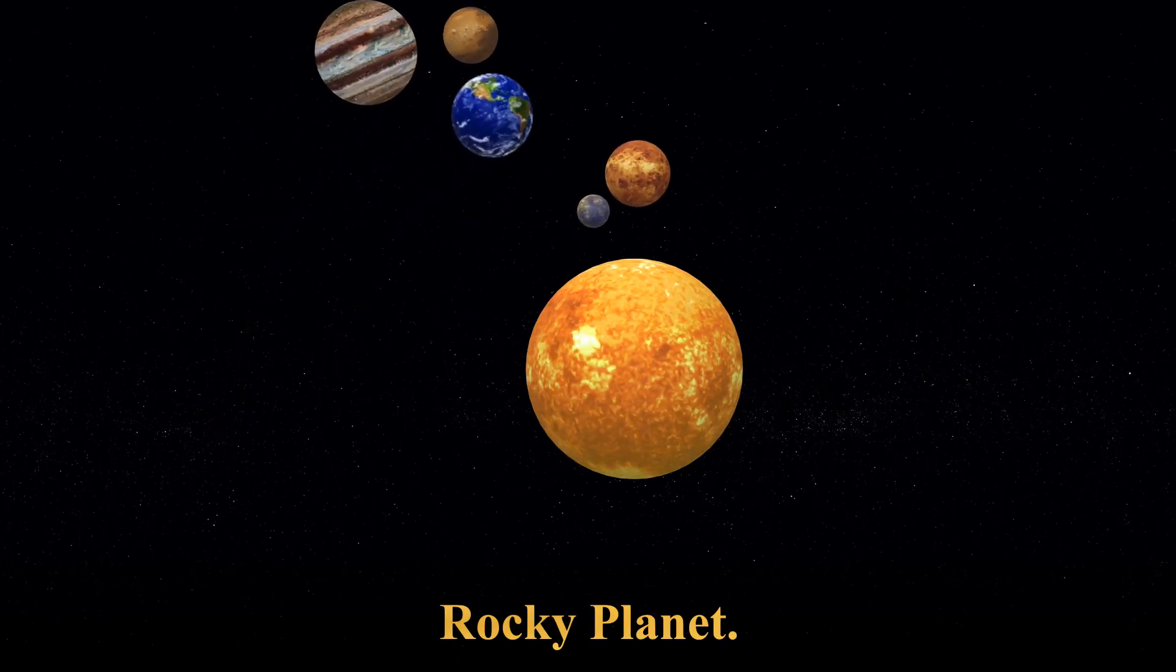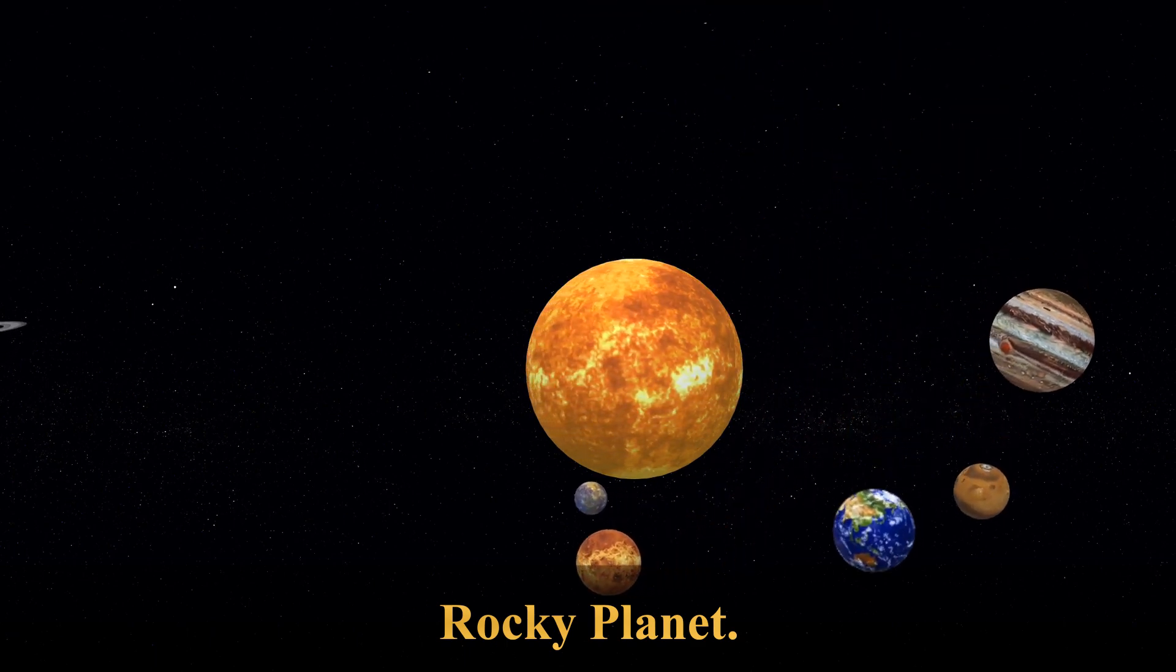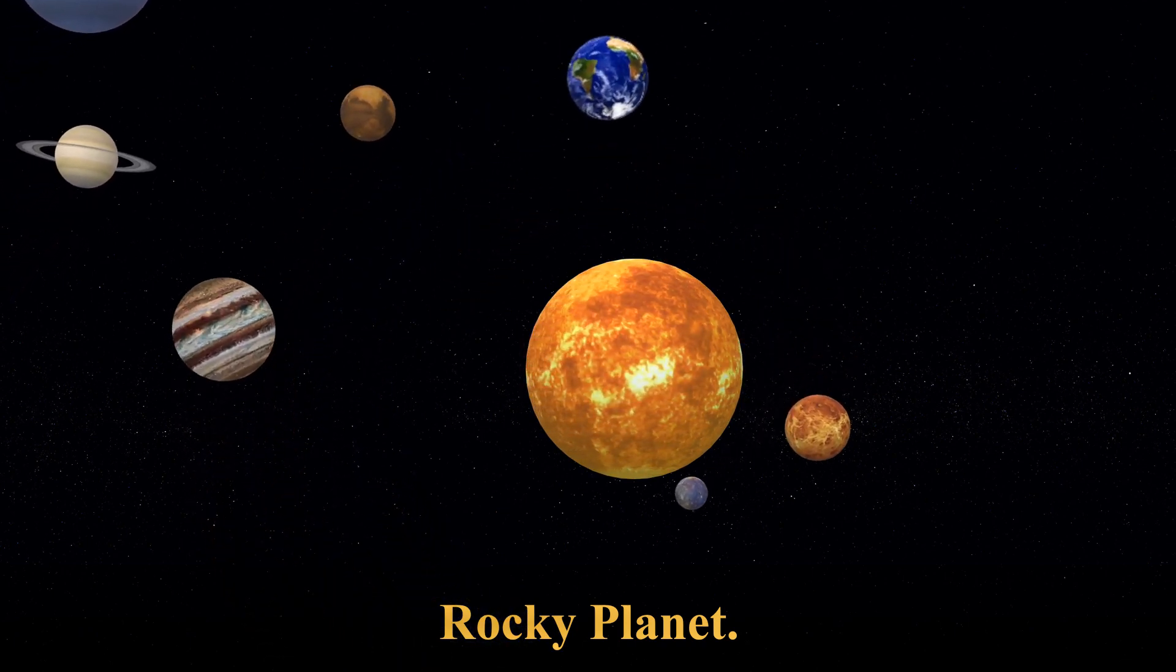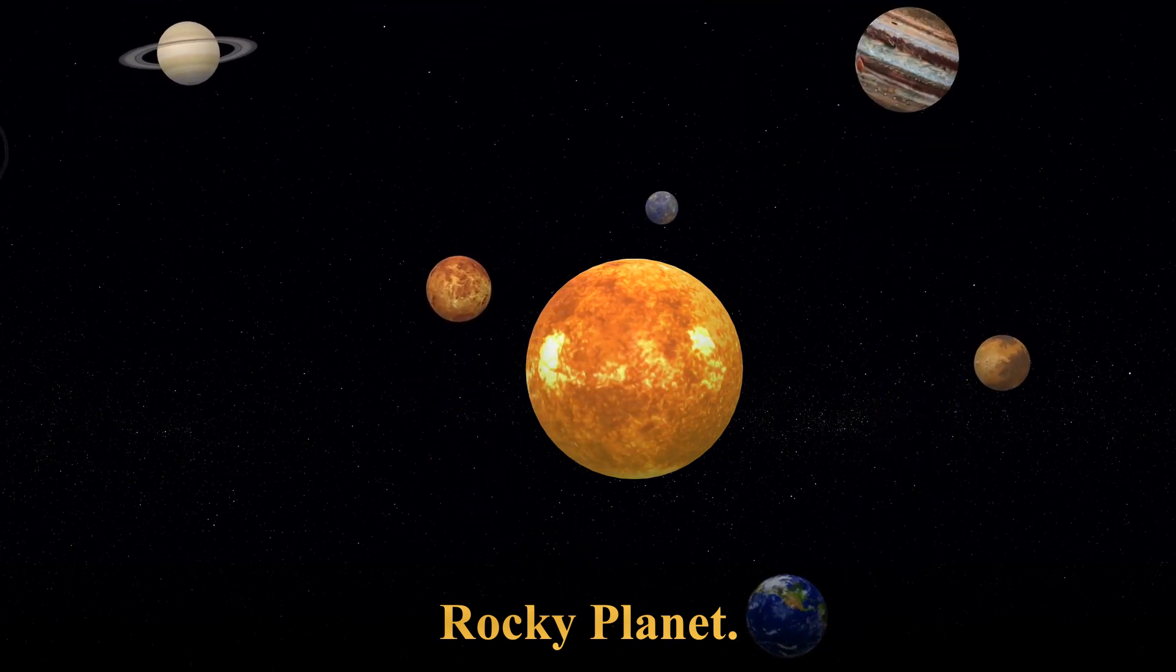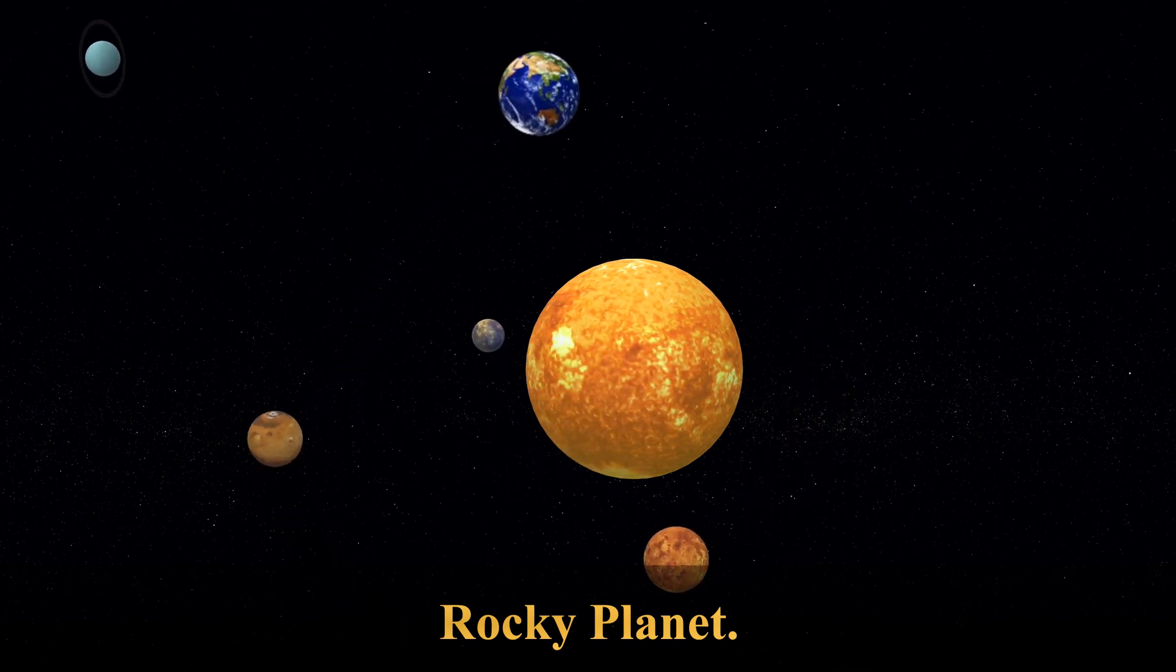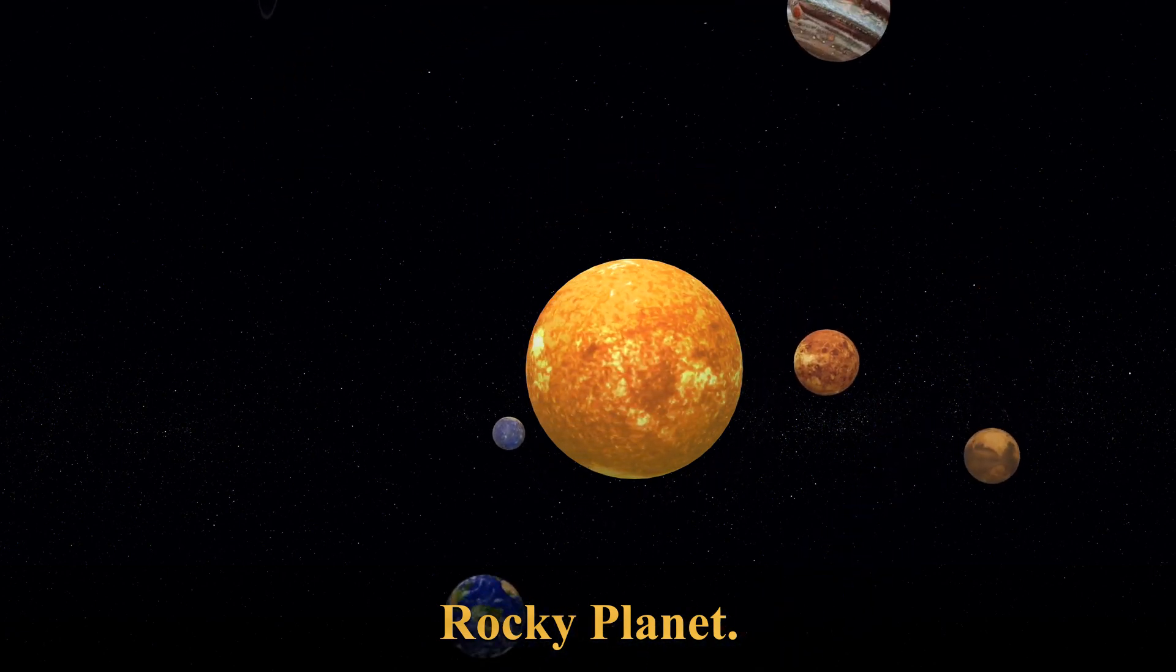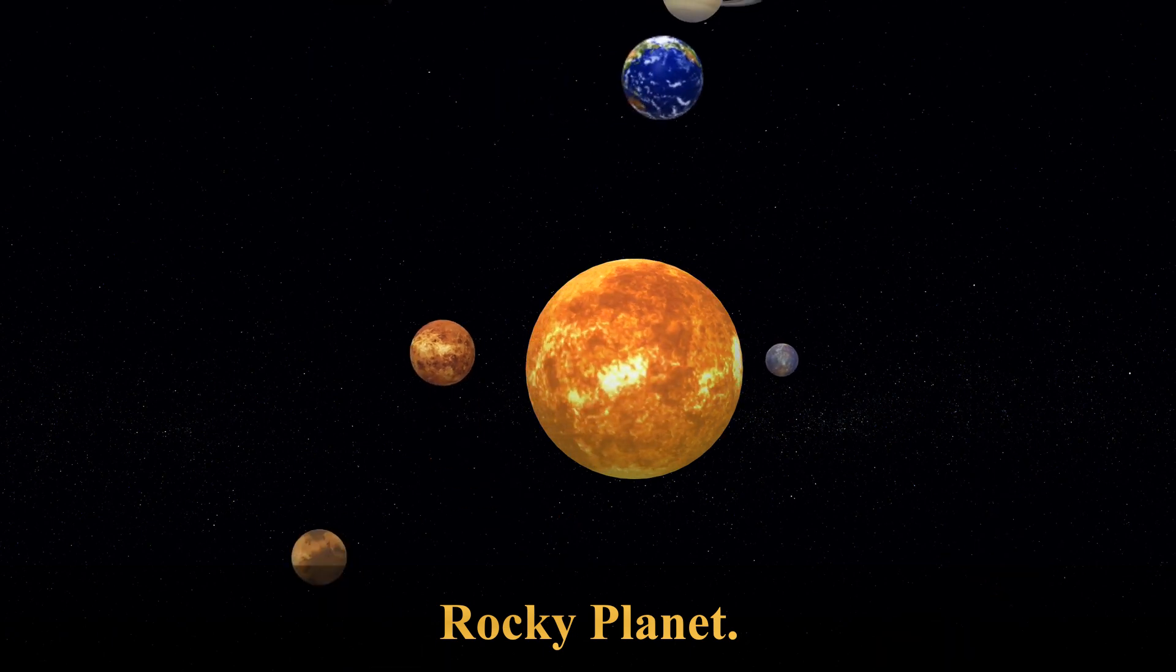4. Rocky Planet. Earth orbits our sun, a star. Earth is the third planet from the sun at a distance of about 93 million miles, that is 150 million kilometers. Our home, Earth, is the only world known to support an atmosphere with free oxygen, oceans of liquid water on the surface and, the big one, life. Earth is one of the four terrestrial planets, like Mercury, Venus, and Mars, it is rocky at the surface.